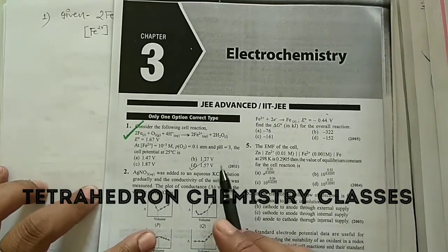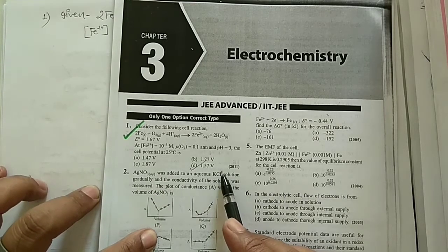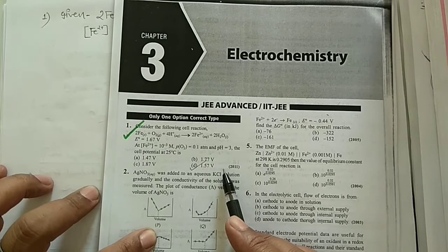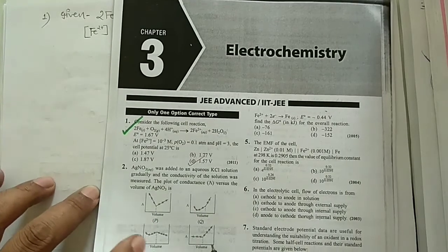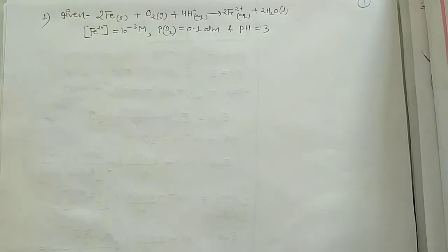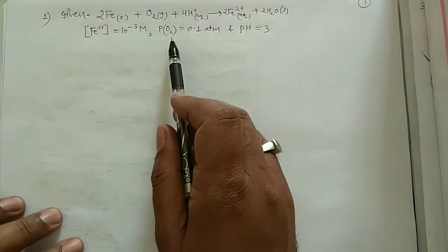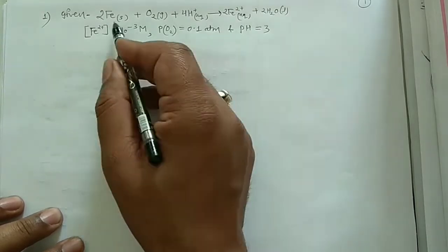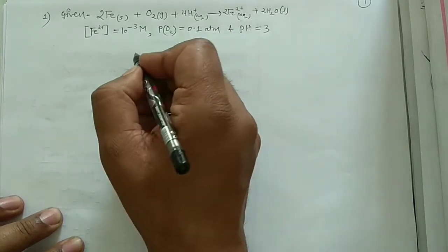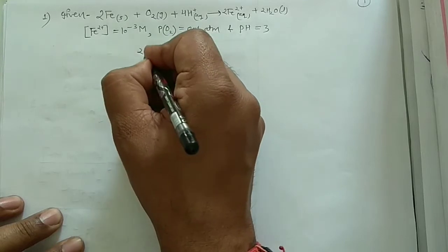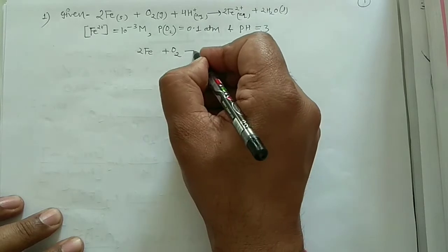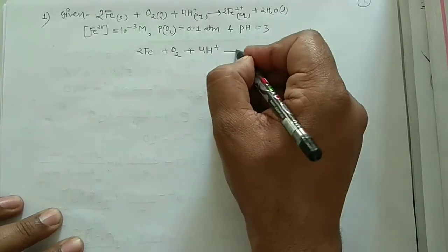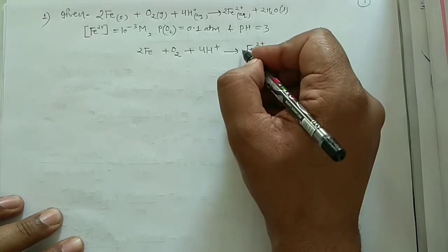This numerical is based on the Nernst equation, which I have explained in my previous lecture on electrochemistry. If you haven't seen that lecture, the link is provided so you can go through it and see how we solve the Nernst equation. Looking at the given question, if you rewrite the reaction, you will find two iron atoms reacting with oxygen and acid to produce Fe²⁺ ions and H₂O.